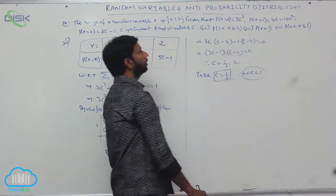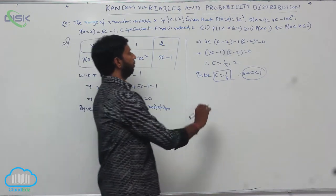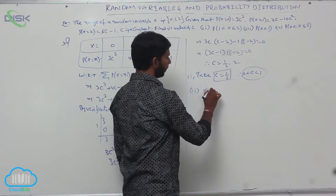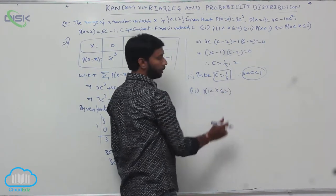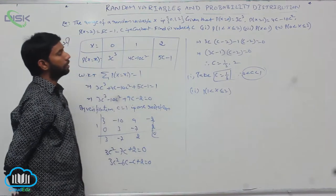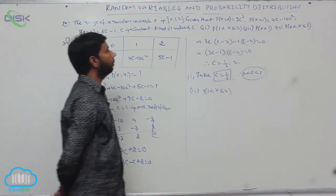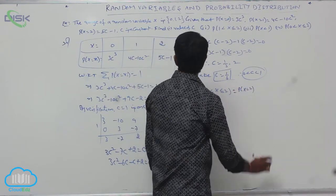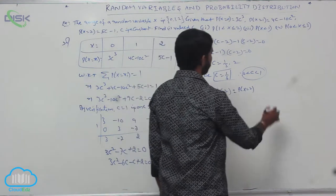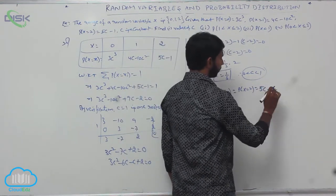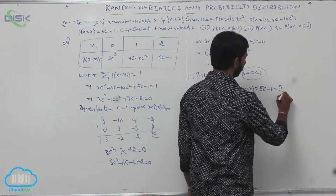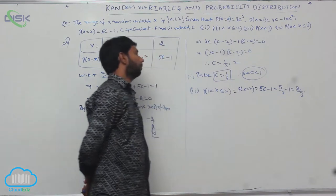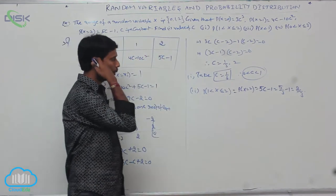For the second part, P(1 < X ≤ 2) means only X = 2. So P(1 < X ≤ 2) = P(X=2) = 5C − 1. Substituting C = 1/3: 5(1/3) − 1 = 5/3 − 1 = 2/3.